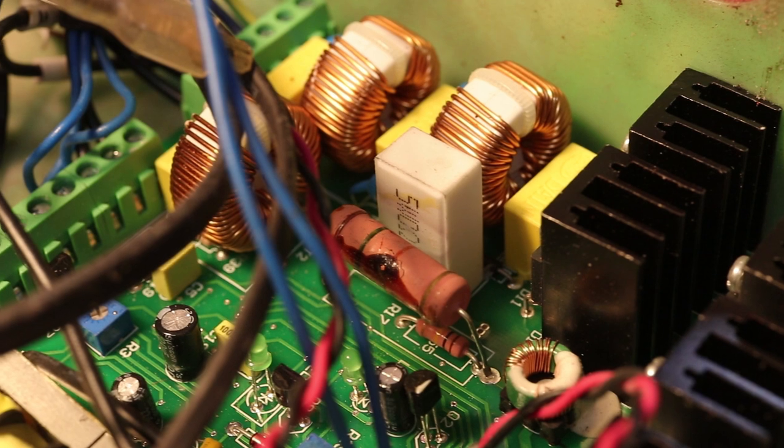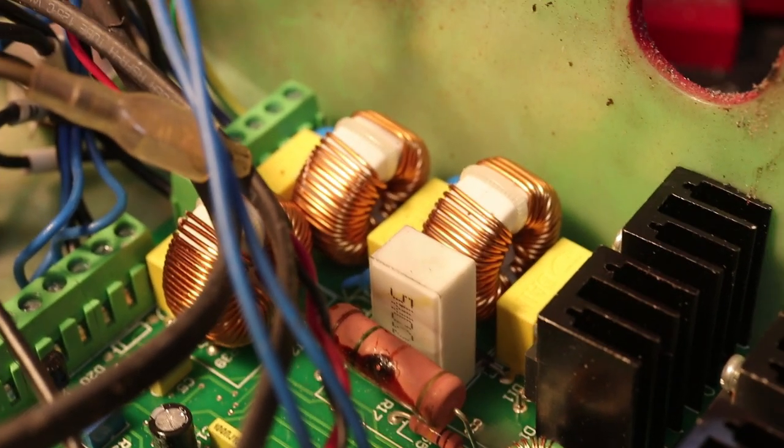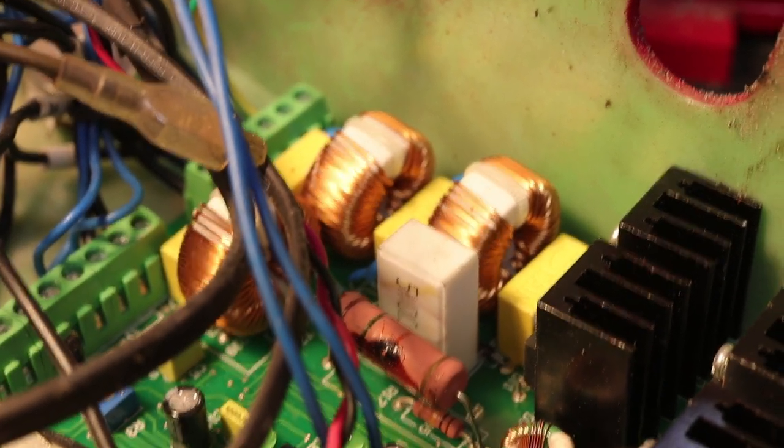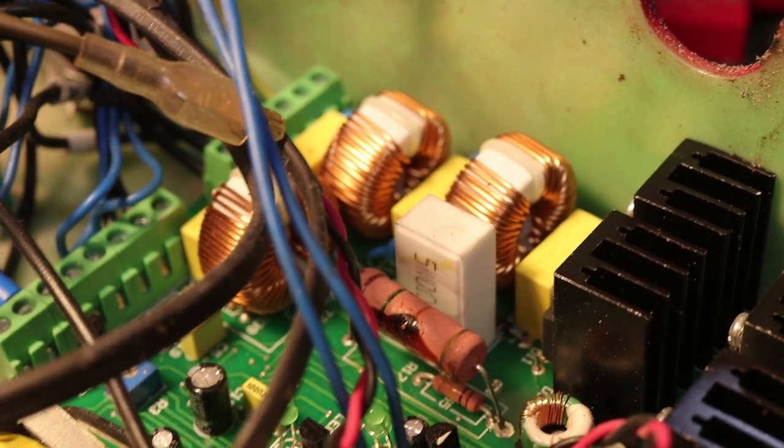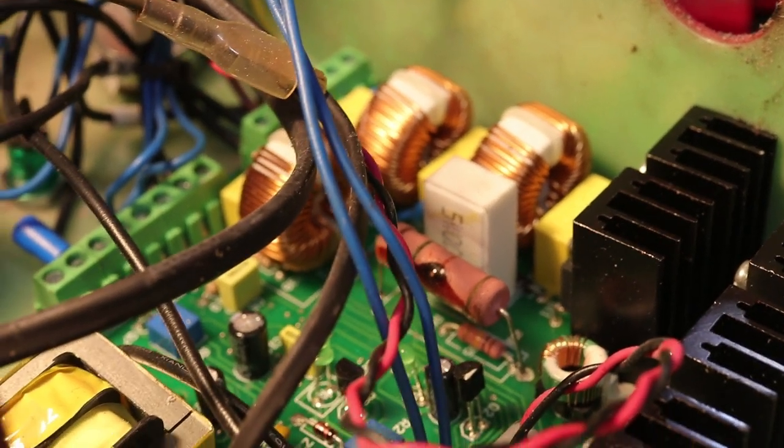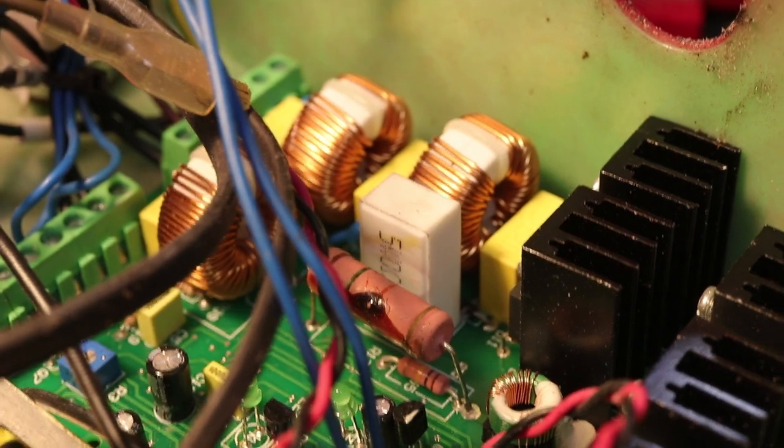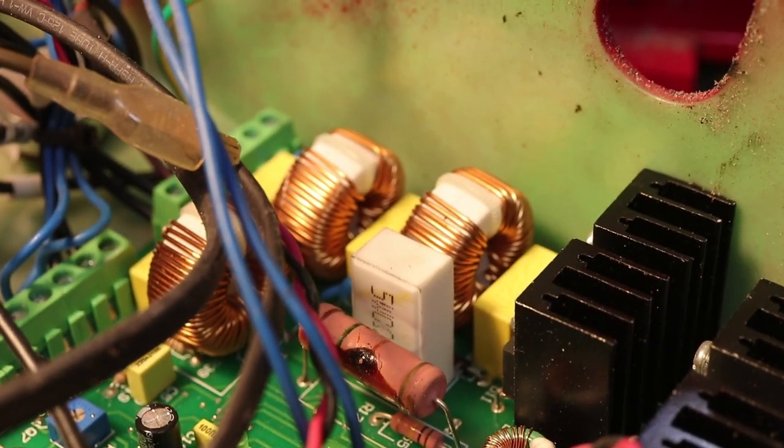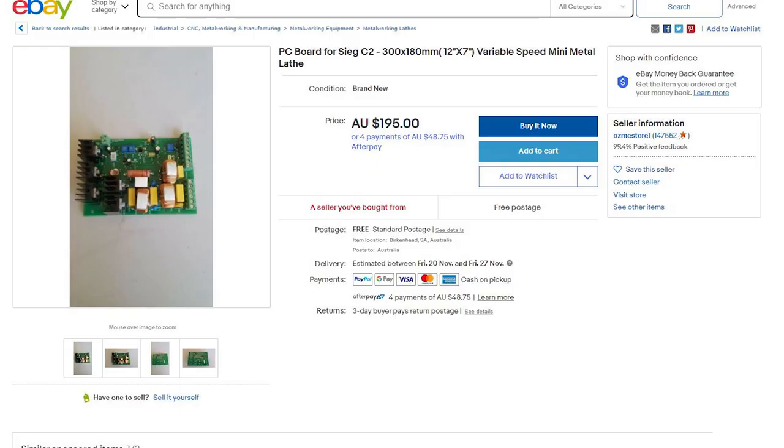With these lathes there actually isn't all that much to go wrong, but something that can easily go wrong are the cheap Chinese electronics. Unfortunately, I got a dud board which is not exactly uncommon, and if I didn't get it replaced under warranty I was looking at a replacement cost of between two and three hundred dollars, which is almost a third of the cost of the lathe.